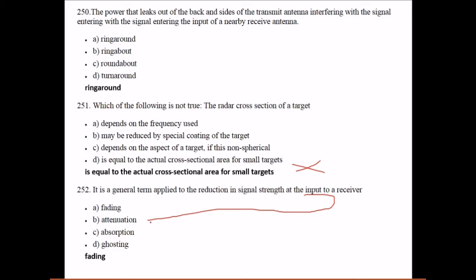It is a general term applied to the reduction in signal strength at the input to a receiver - it is fading. There is a very sharp line difference between attenuation and fading. Indicate which of the following cannot be followed by the word waveguide - it is coaxial.